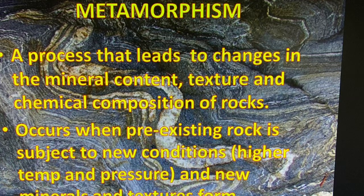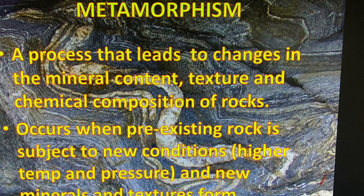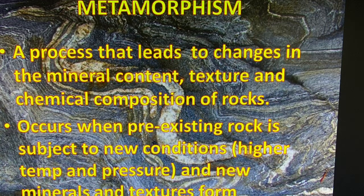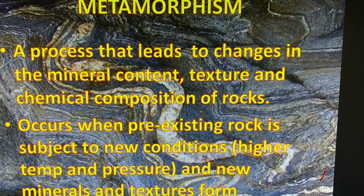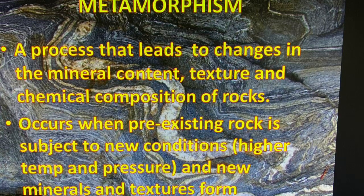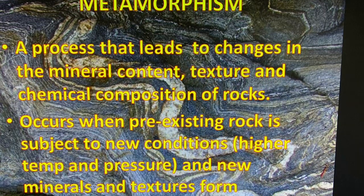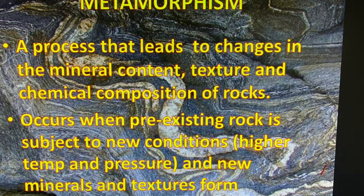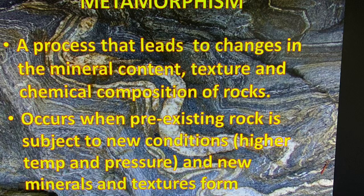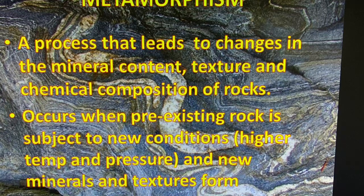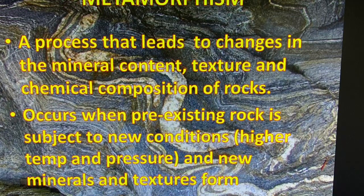Metamorphism happens when a pre-existing rock, sometimes called a mother rock, is put under new conditions. Typically these new conditions involve increased temperature and increased pressure. The important thing to remember is that the rock has to stay solid. If the rock melts — if it goes through a phase change into magma — that is not metamorphism; it would then become an igneous rock.